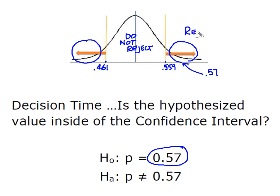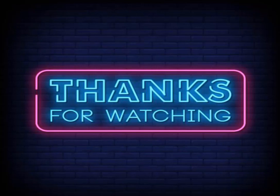Since it falls outside of the interval, my decision is to reject H₀. Based on the confidence interval and the hypothesized value falling outside of that interval, there is insufficient evidence to support the strategist's claim that 57% of the voters are in support of his candidate. As always, I hope you found this useful — thanks for watching.